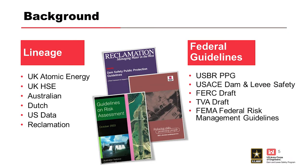A little background and history on risk analysis. Risk guidelines for tolerable risk have a long lineage from several industries and countries. Key guidelines have typically followed disasters such as the Piper Alpha failure or the Teton Dam failure. Many of our foundational principles used in federal risk management guidelines trace back to the UK's Health and Safety Executive, ANCOLD, and international guidelines from nuclear facilities.